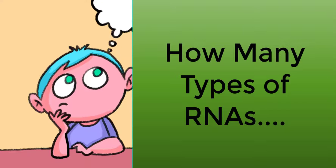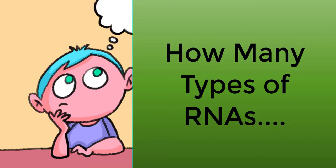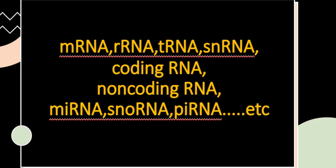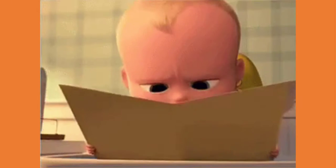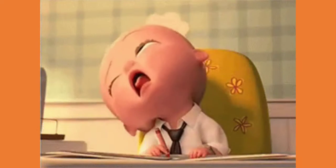Hey everyone, how many types of RNAs do we know? mRNA, tRNA, rRNA, snRNA, coding RNA, non-coding RNA, miRNA, snoRNA, piwi-interacting RNA — also known as piRNA. Oh god, such a big list!